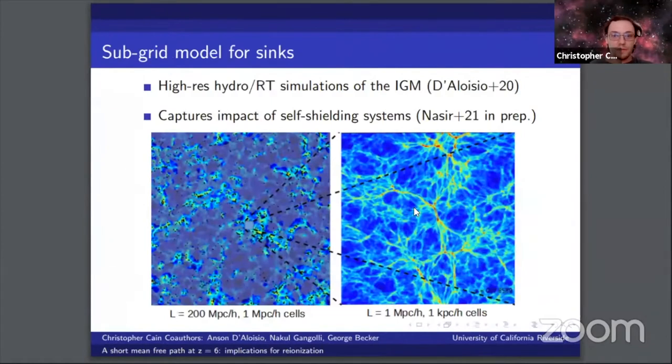We've also developed a subgrid model for the impact of the ionizing photon sinks, the gas structures that set the recombination rate that are present on very small scales. We use a suite of Hydro-RT simulations with very high spatial resolution, like those from D'Aloisio et al. 2020, to capture the evolution of the ionizing photon opacity in environments with different photo ionization rates, redshifts of reionization, and large scale over densities.